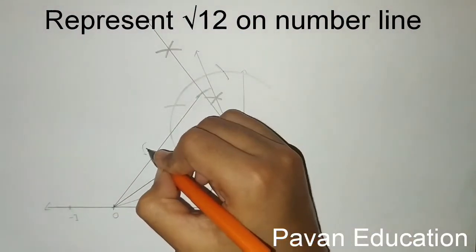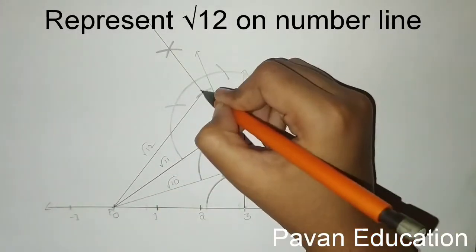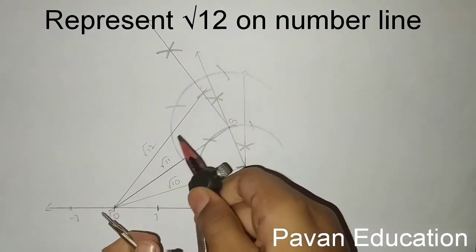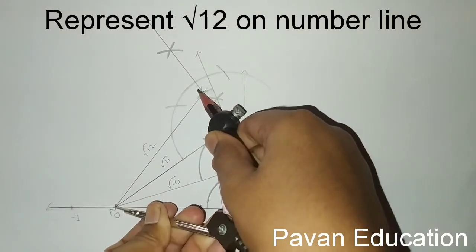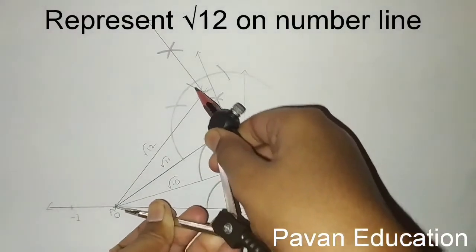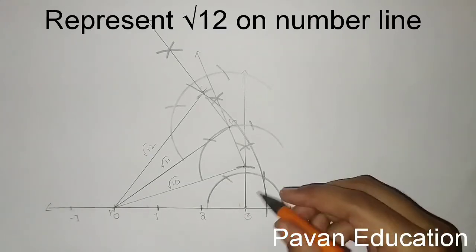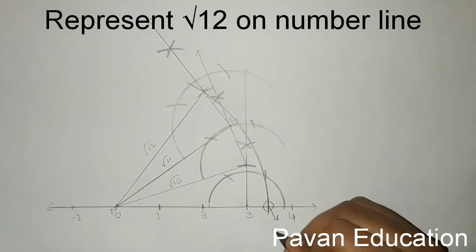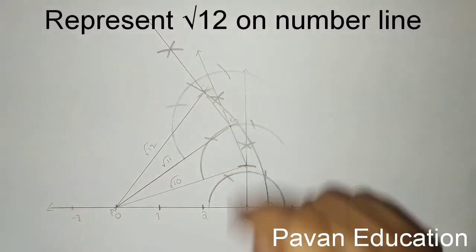Joining this to 0, we know that the hypotenuse is root 12. We can label the triangle as A, B, and C. Take a compass — the radius must be the length of AC. Mark this point on the number line. This point is root 12 on the number line. We know root 12 has base root 11 and height 1 unit.